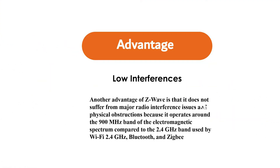Low interference. Another advantage of Z-Wave is that it does not suffer from major radio interference issues and physical obstructions because it operates around the 900 megahertz band of the electromagnetic spectrum, compared to the 2.4 gigahertz band used by Wi-Fi, Bluetooth and ZigBee.